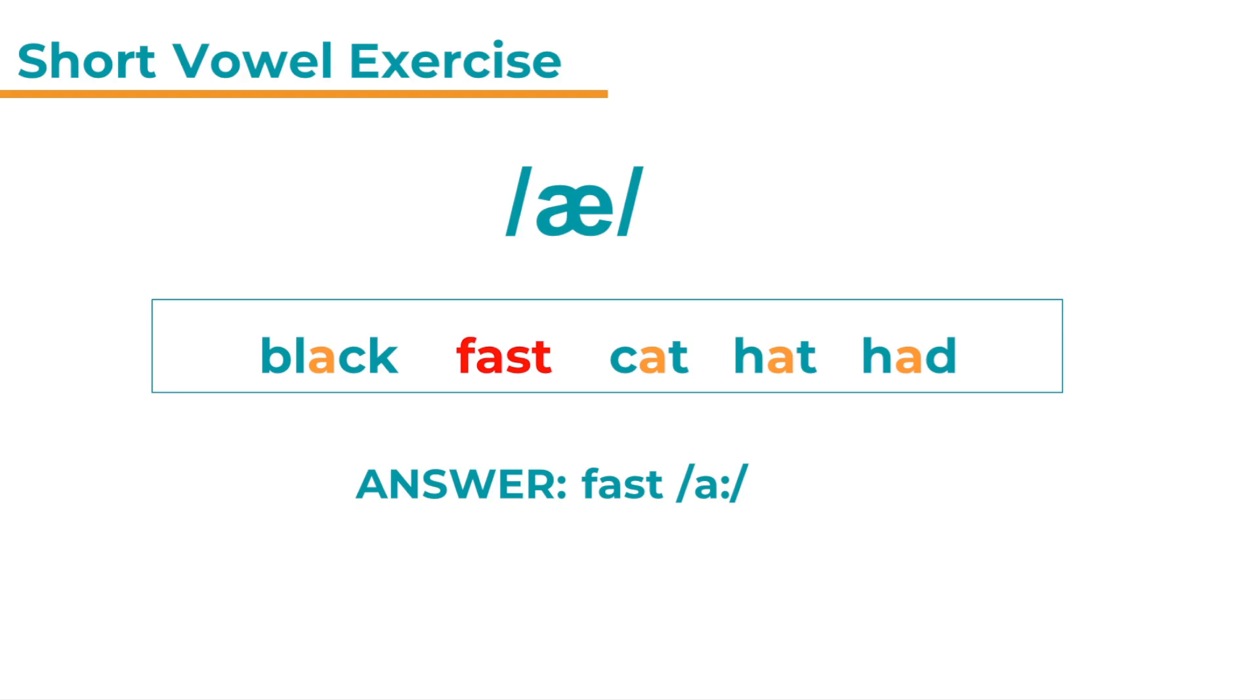Fast contains a long ɑː sound. But black, cat, hat and head all contain an æ. All of the spelling though is the same. It's always an a so it doesn't really help much. But sometimes an a could be a long ɑː as in fast. And sometimes it is pronounced with an æ as in black and cat and hat and head.